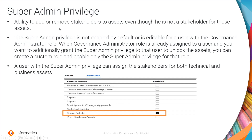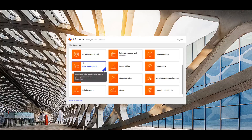The super admin privilege provides the ability to add or remove stakeholders to assets, even if the user is not a stakeholder for those assets. Super admin privilege can also assign stakeholders for both technical as well as business assets. This super admin privilege is not enabled by default — you have to enable it as per your use. To manage the roles, you need to log into IDMC and go to the Administrator section.